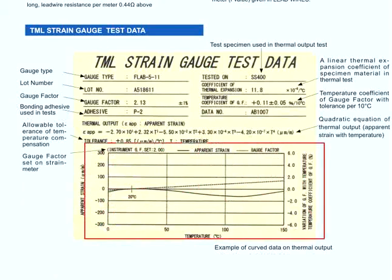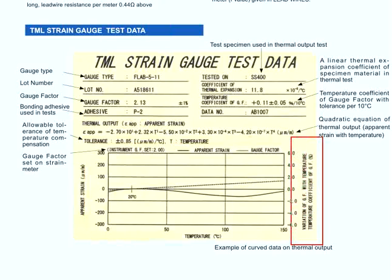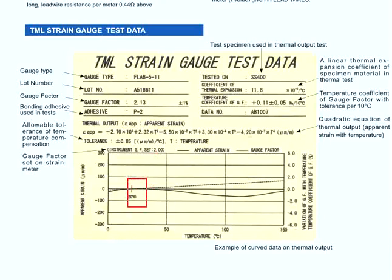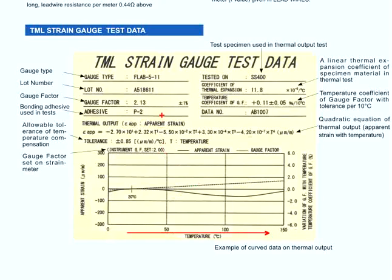There will also be a curve here allowing you to make corrections in terms of the gauge factor when you are using the strain gauge at temperatures other than 20 degrees Celsius. Very little variation will be imposed on the gauge factor if the testing environment temperature is close to 20 degrees Celsius. However, as the temperature increases, the variations in the gauge factor increase, as represented by the dotted line shown here.